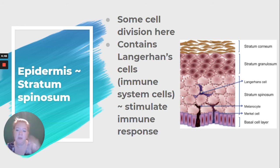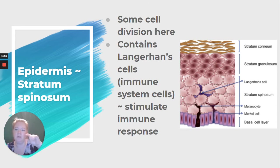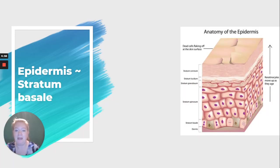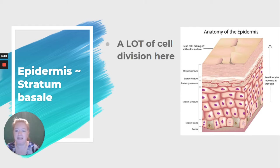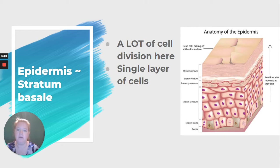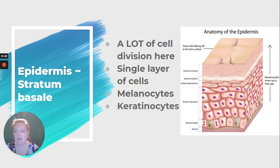So the stratum spinosum is below stratum granulosum. Recapping: stratum corneum, stratum lucidum only in thick skin, stratum granulosum, and now stratum spinosum. Our last and final layer of the epidermis is the stratum basale. We have a lot of cell division happening here — this is really the hotbed of cell division. It is a single layer of cells, but it contains two important types: melanocytes and keratinocytes.